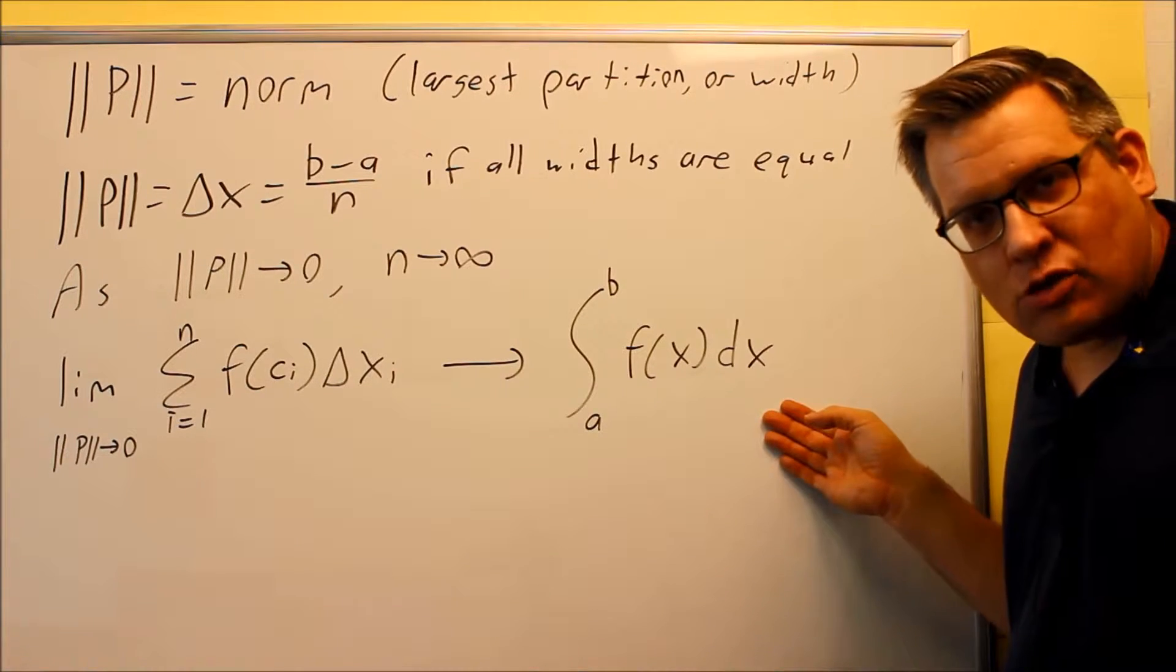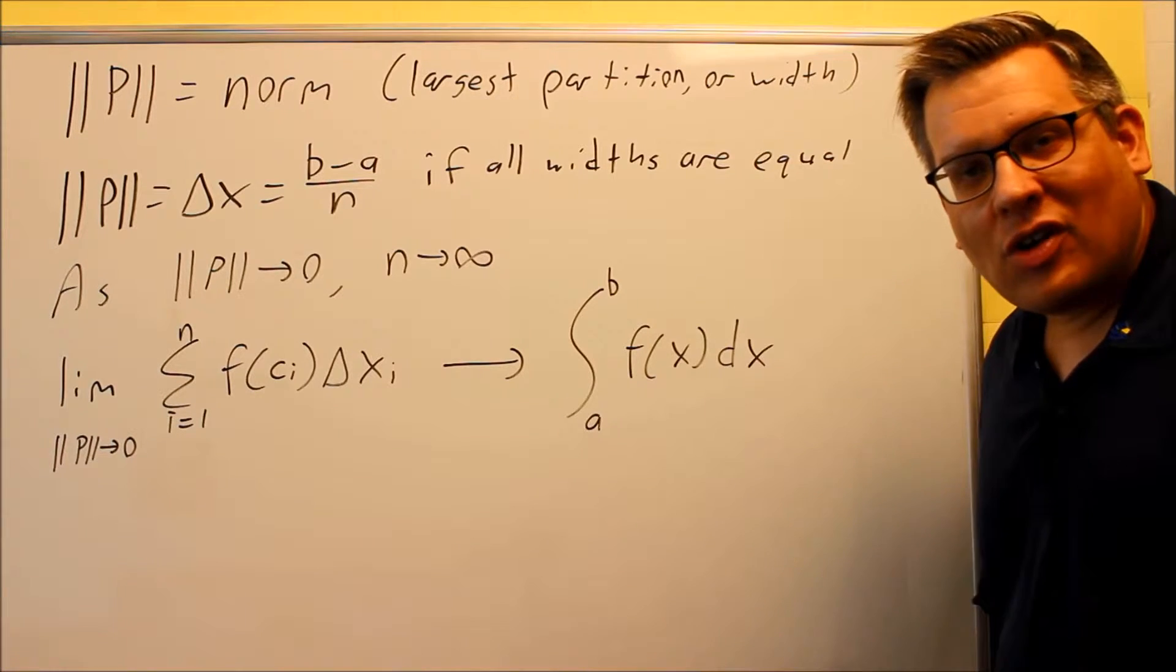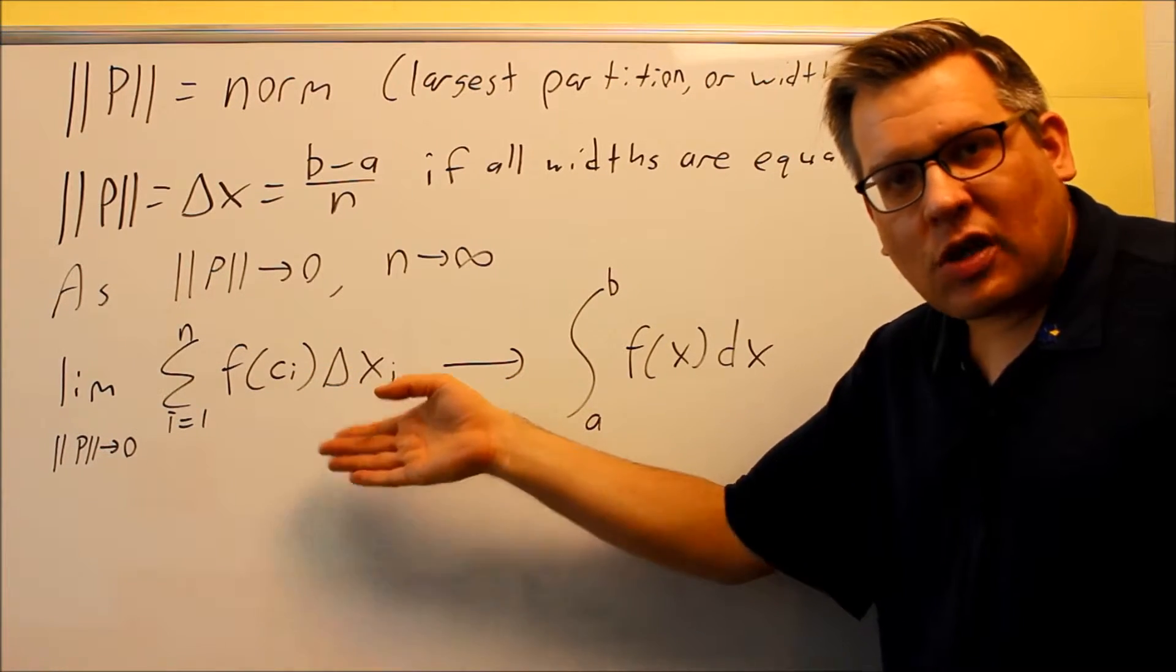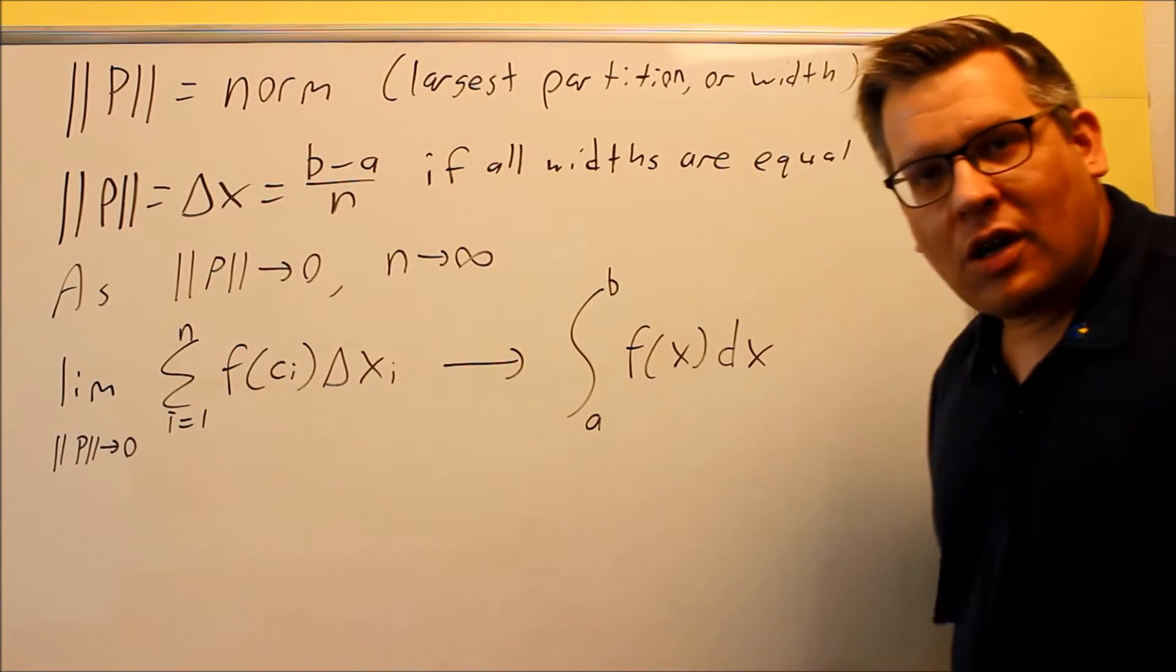We've been working with anti-derivatives, and we did talk about this notation before, but we didn't really derive where it comes from. So the reason why we're working with limit process is because now you can see actually where this notation comes from. It comes directly from the limit process.